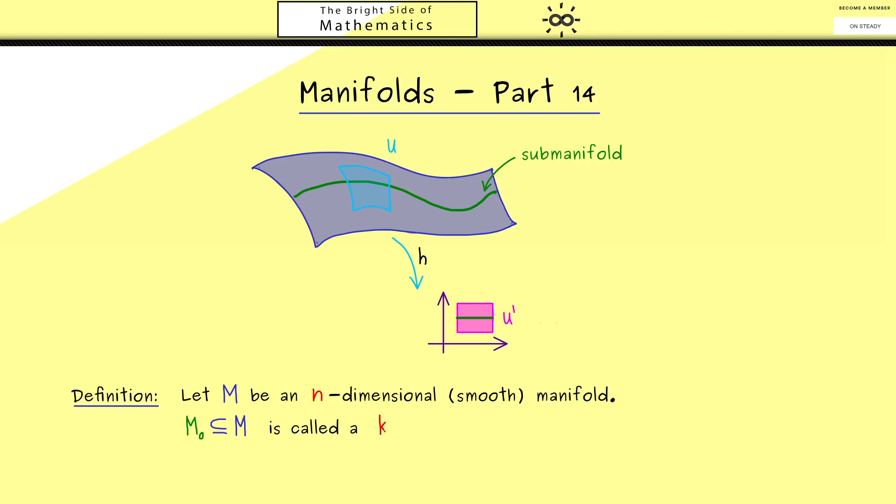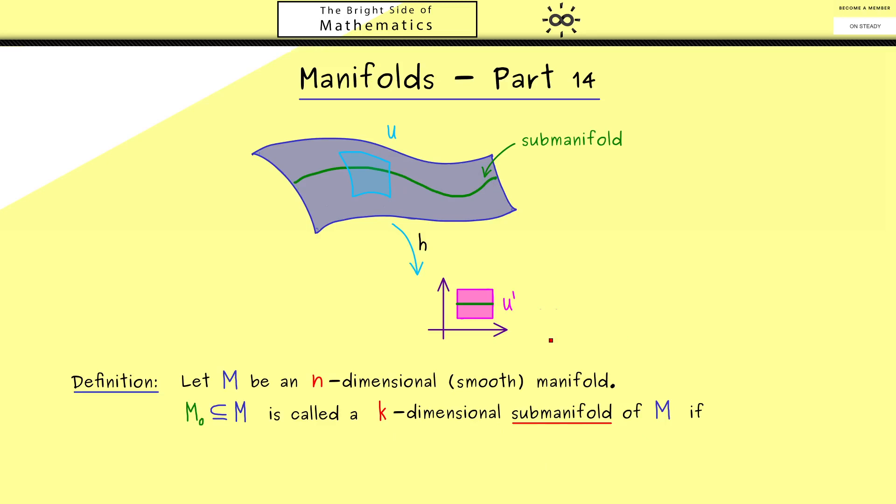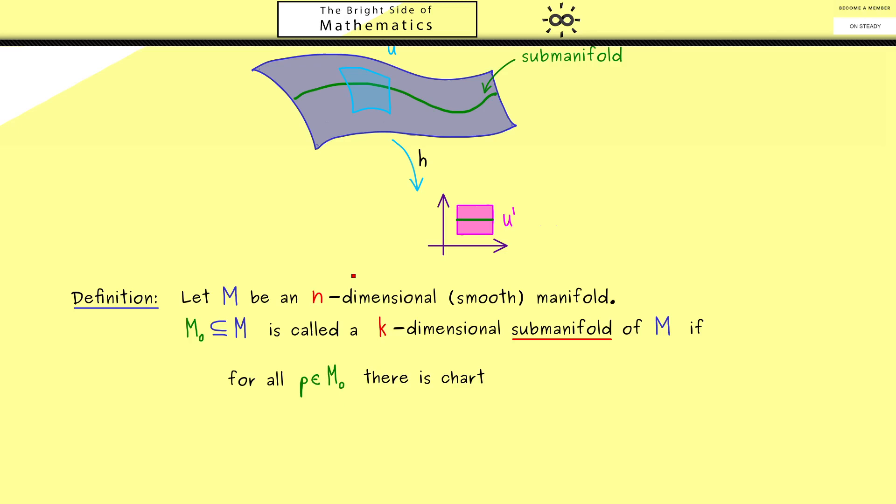And this is a k-dimensional sub-manifold of M, where k is less than or equal to n. So you see, the new notion here is sub-manifold, and we use this notion when the condition we described above is fulfilled. More precisely, this means that for all points p in our subset M_0, we find an open neighborhood around this point.